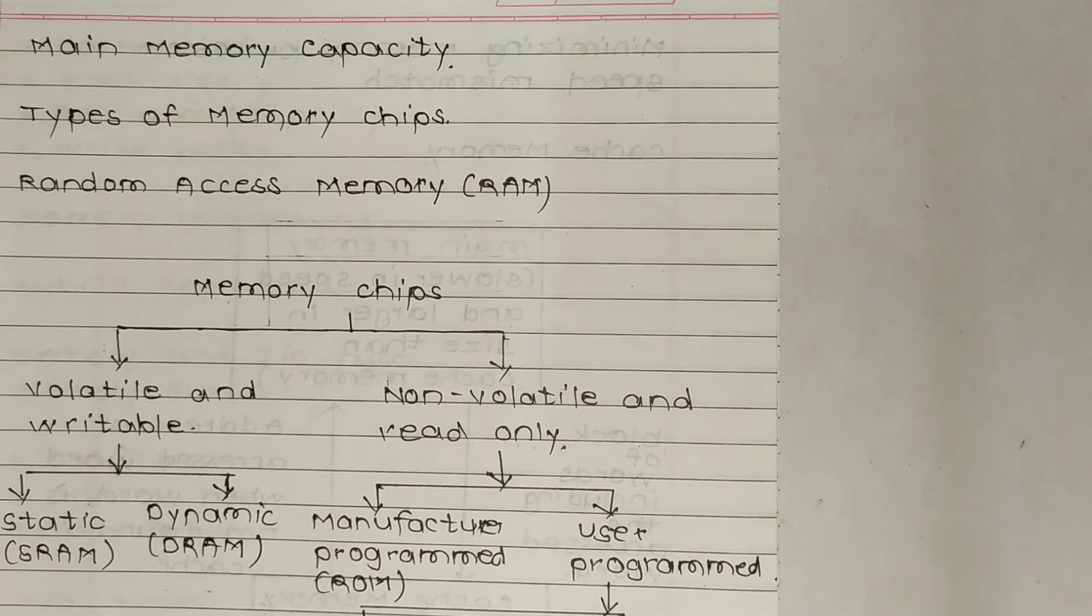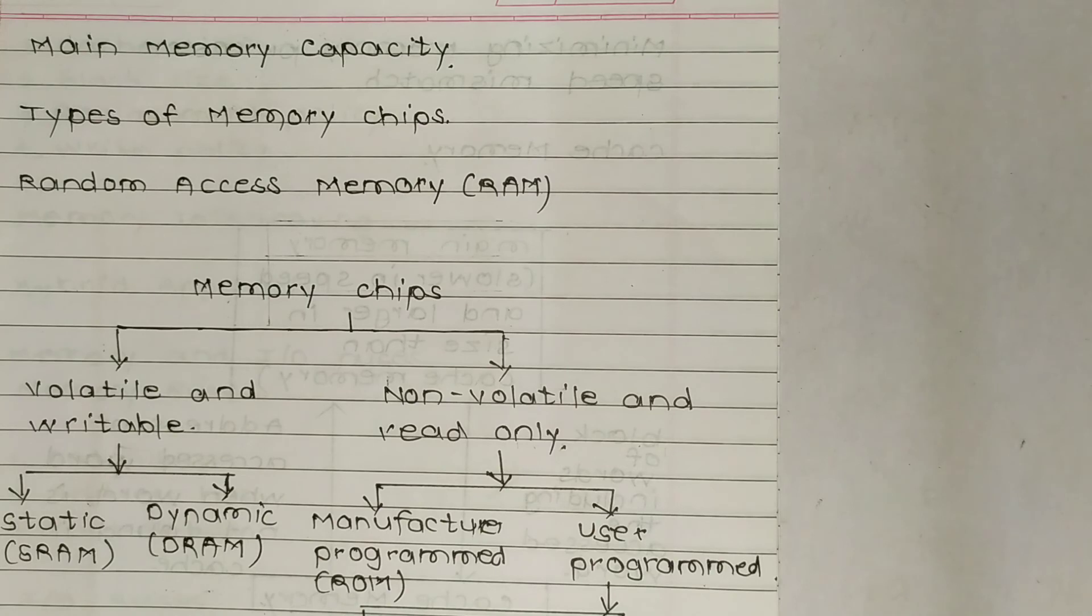If a word size of a memory is 8 bits, that is equal to a byte, it becomes immaterial whether memory capacity is expressed in terms of bytes or words. Hence, a memory having 2 raised to 16 words with each word of 8 bits is simply referred to as 64K memory, where the word size of 8 bits is implicit.